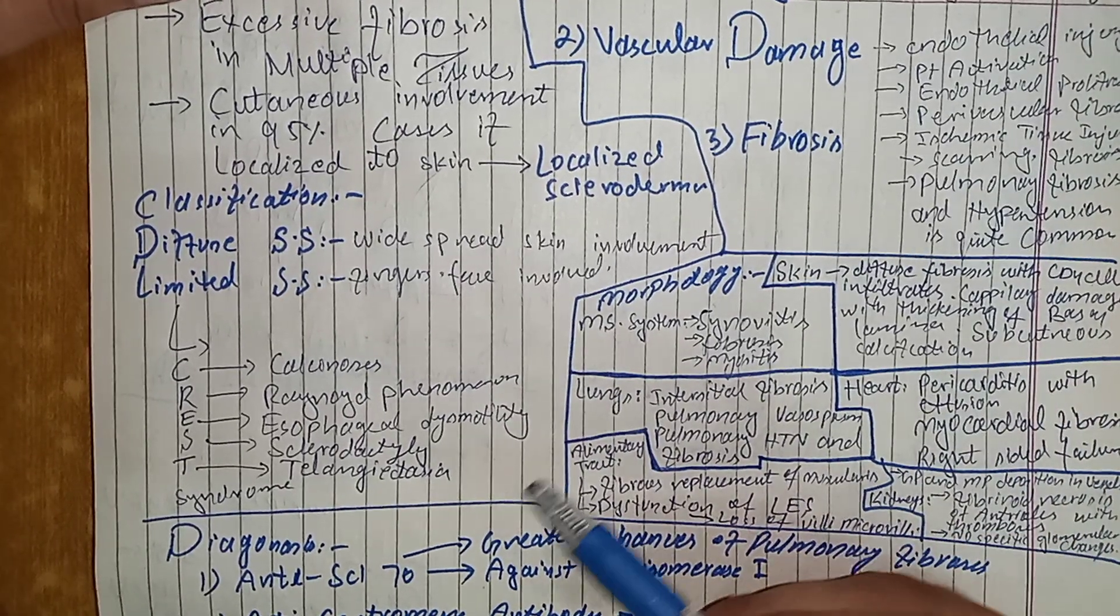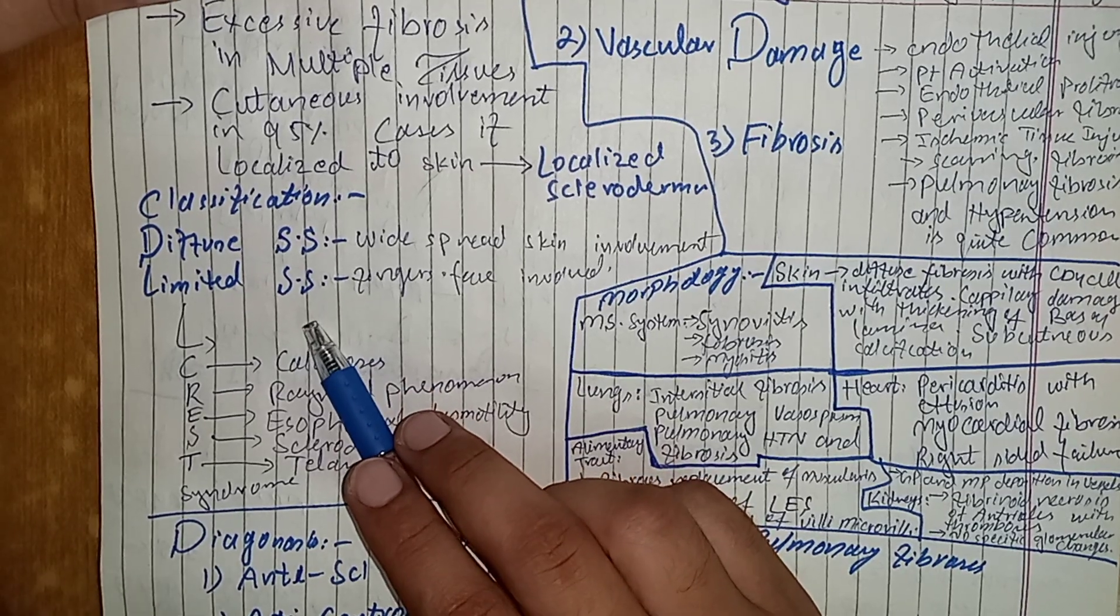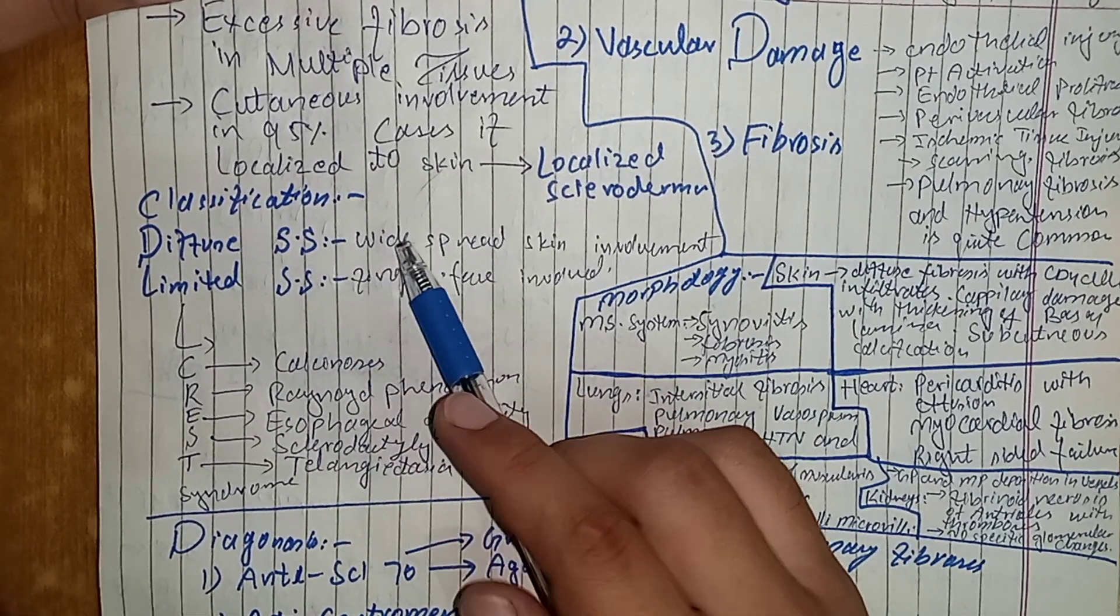So in limited systemic sclerosis, the involvement of the viscera and internal body organs is late. However, in diffuse systemic sclerosis, there is early involvement of the body organs.